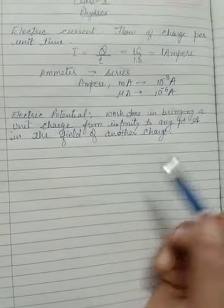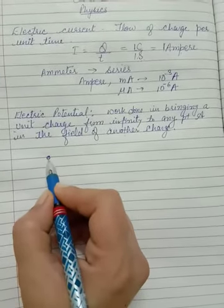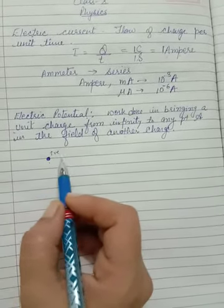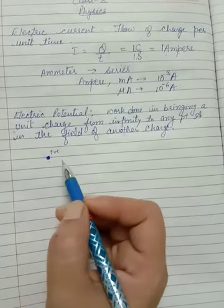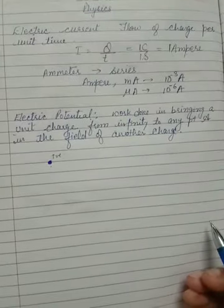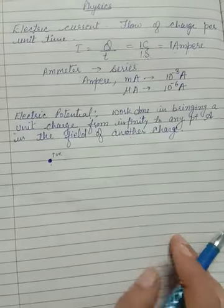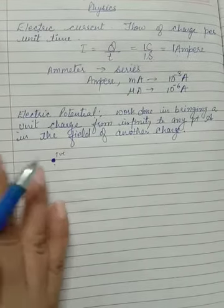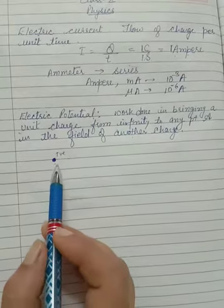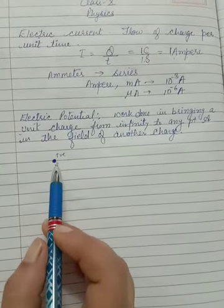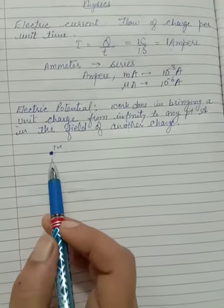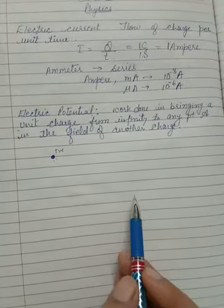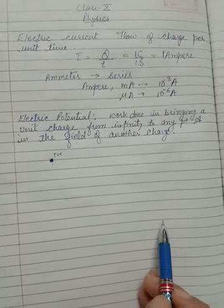To understand this, suppose we have a positive charge. If we bring another positive charge near it, it will exert a repulsive force. Up to what limit will it repel? We say it will repel up to infinity. As we move closer to the positive charge, the repulsive force is more. As we go away, repulsion decreases and finally becomes zero at infinity.